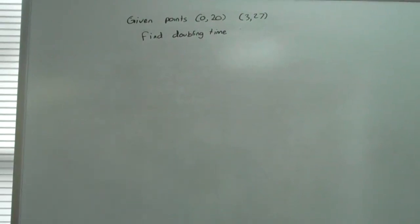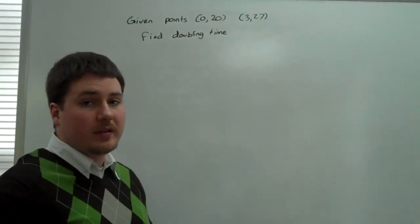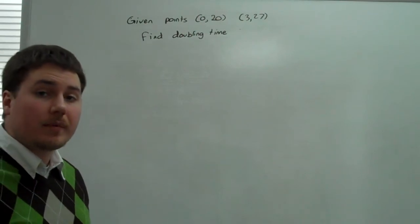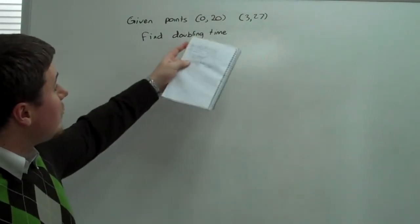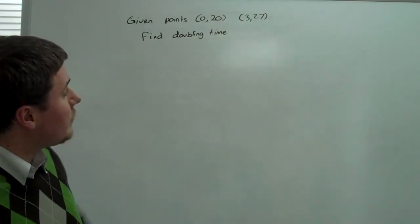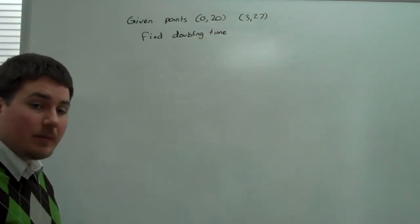All right, for this next problem, we're going to use the same data points that we used in the previous problem. If you haven't done that problem, I suggest you go back and take a look at it. We have the points (0,20) and (3,27). We want to find the doubling time.